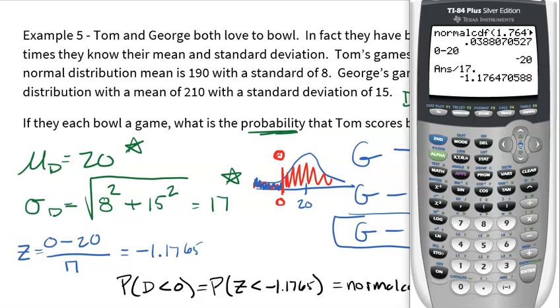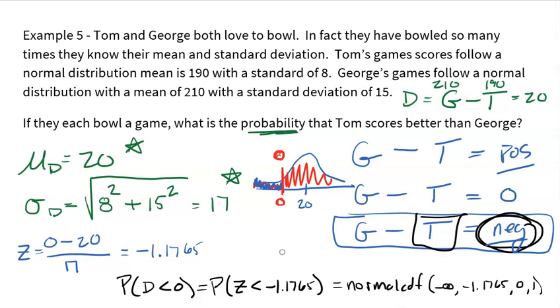All right. So here I go. Second vars, normal CDF. I'm going to start at negative 99. That's really, really low. And I'm going to go to the negative 1.1765 Z score that's represented by a difference of zero. And I get a probability of 0.1197. So not unlikely at all. So in fact, it would not be significant. It would not be weird. It would not be unlikely if Tom did better. In fact, it happens about 12% of the time. And that's just because their scores deviate. Now that does mean the other roughly 88% of the time, George is going to do better. Well, duh. George should do better because his score is typically 20 points higher than Tom.